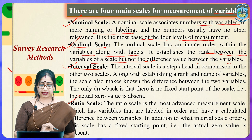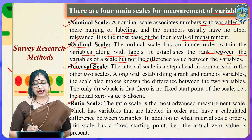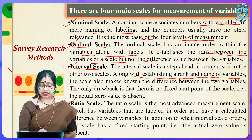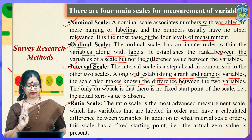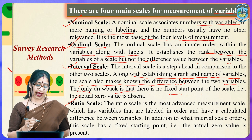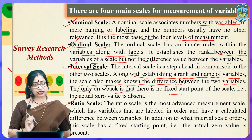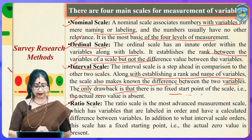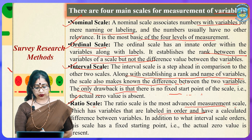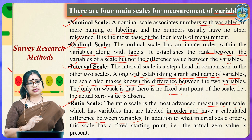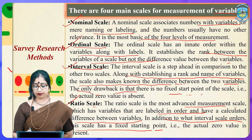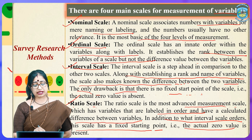The interval scale is a step ahead of the nominal and ordinal scales. Along with establishing a rank and name of variables, it also makes known the difference between two variables taken in the hypothesis. The drawback is that there is no fixed starting point — the actual zero value is absent. The ratio scale is the most advanced measurement scale: variables are labelled in order, have a calculated difference between dependent and independent variables, and unlike the interval scale, it has a fixed starting point — the actual zero value is present.